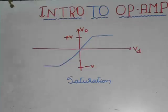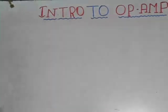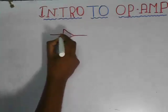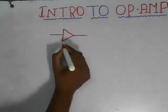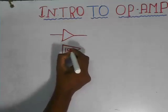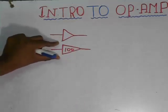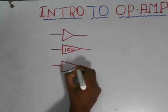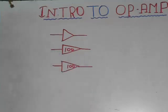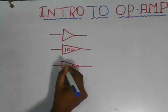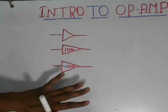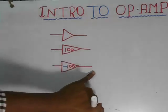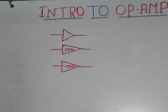Now let us see some figures you will commonly encounter while solving problems. If you see a triangle symbol, it represents an amplifier. If you see a triangle with '100' written, it represents an amplifier with an open-loop gain of 100. If you see a triangle with '−100', it represents an amplifier with an open-loop gain of 100 but the output is 180 degrees phase-shifted with respect to the input. These are very important concepts to keep in mind.